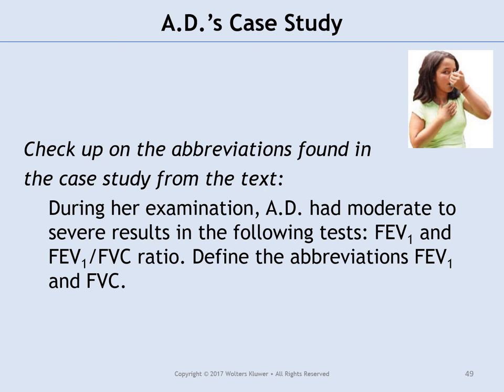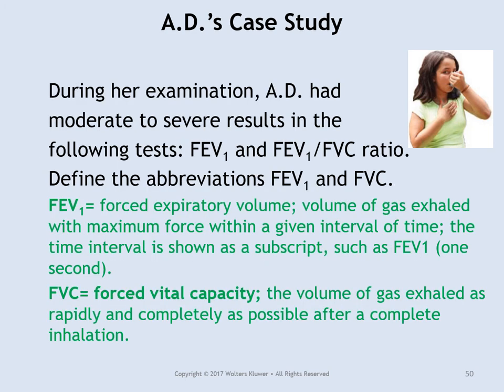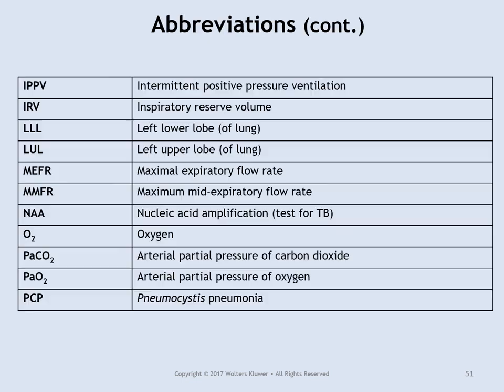For the case study, the patient had moderate to severe results in FEV and FVC tests. FEV — forced expiratory volume — is the volume of gas exhaled with maximal force within a given time interval, such as FEV1 over one second. FVC — forced vital capacity — is the volume of gas exhaled as rapidly and completely as possible after a complete inhalation.